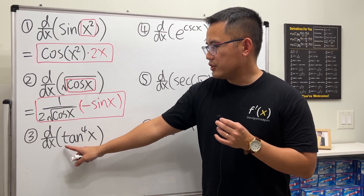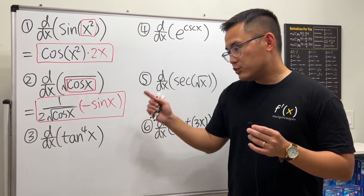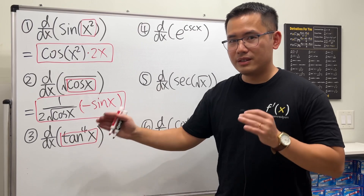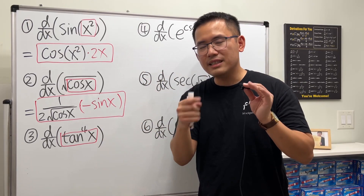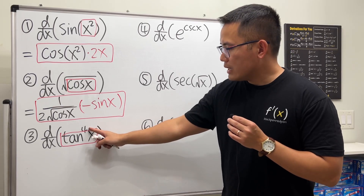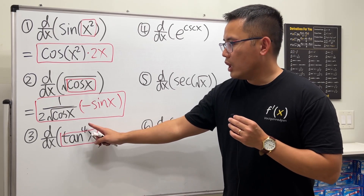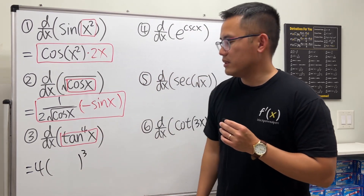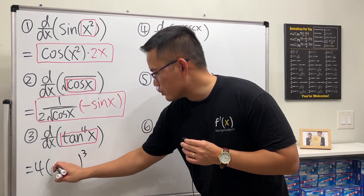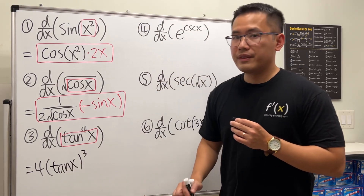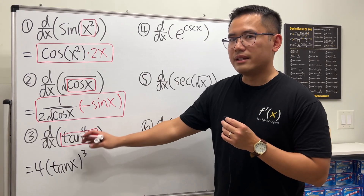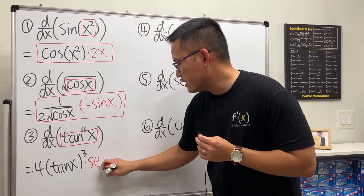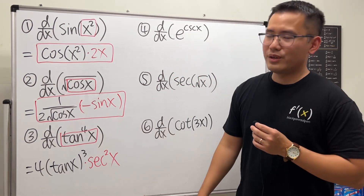Next, we differentiate tangent to the fourth power of x, which means tangent x is inside raised to the fourth power. We use the power rule first — bring the four to the front and subtract one, giving us 4 times tangent to the third power of x. Then we multiply by the derivative of tangent. Tangent and secant are best friends, so the derivative of tangent is secant squared x.